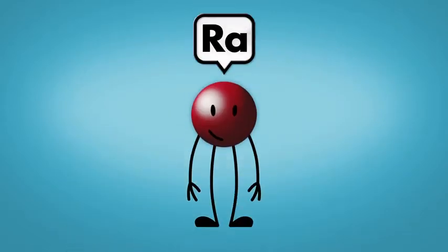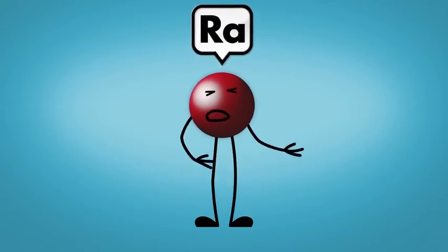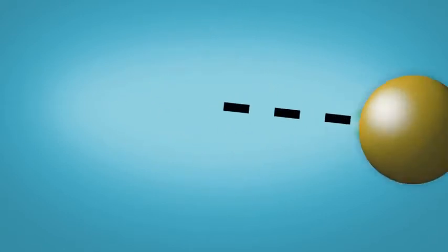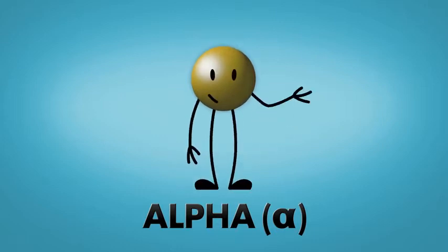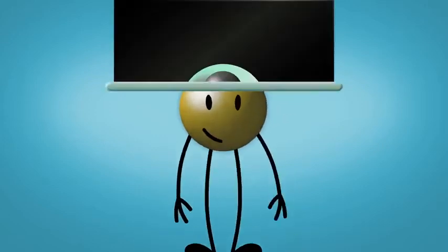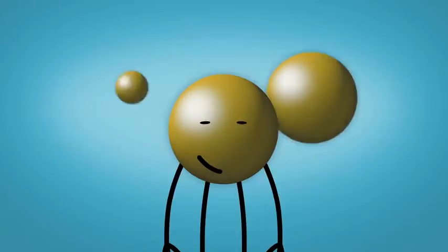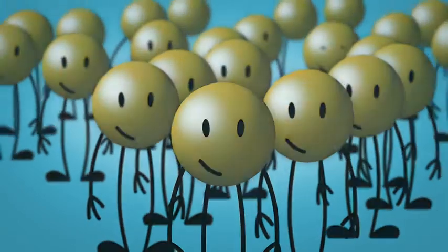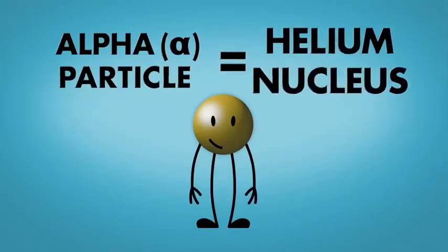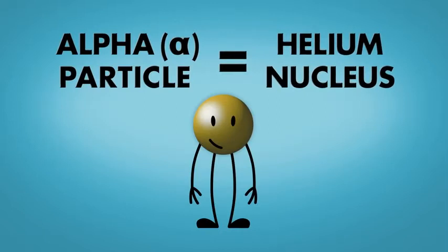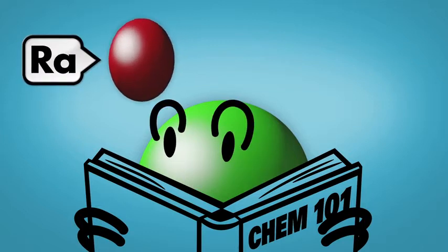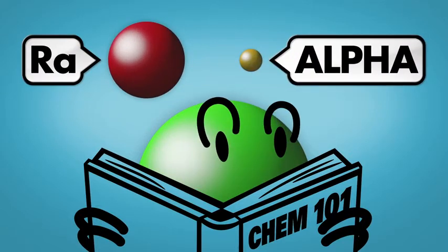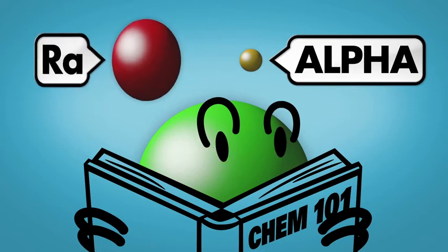The other particle that emits spontaneously from an unstable nucleus is alpha. An alpha particle is 8000 times more massive than beta, and it's a bit slower. Alpha is made from two protons and two neutrons. If we trap a lot of alpha particles together, we get helium gas. Alpha is a helium nucleus. Like the beta particle, we would not have expected a heavier nucleus to throw out helium. But again, it happens, and the nucleus becomes a new element.